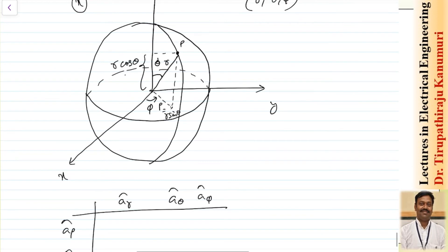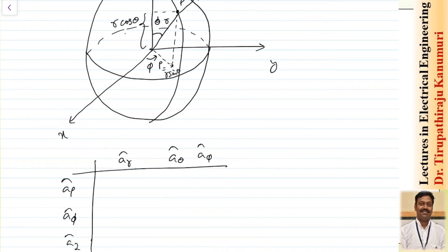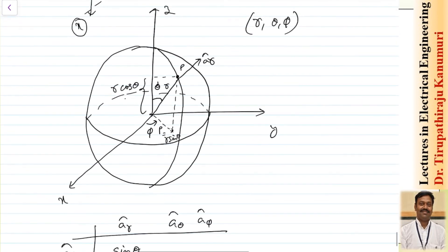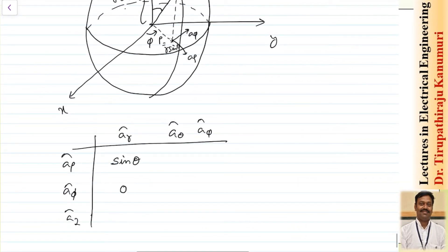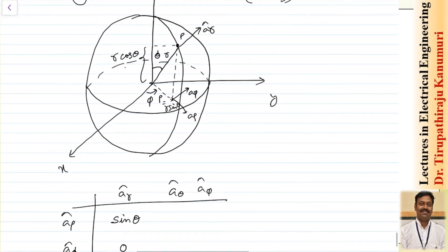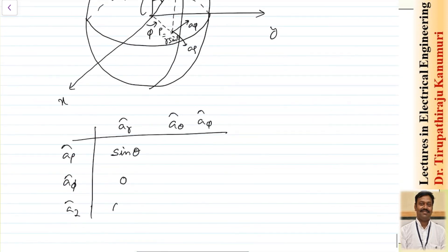For a_r: projecting in the rho direction gives sin(theta), because a_r projected into the xy plane yields sin(theta). Since a_r is perpendicular to a_phi, the a_phi component is 0. The z-component of a_r is cos(theta), as we have already derived.